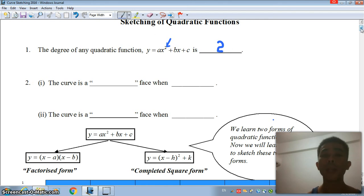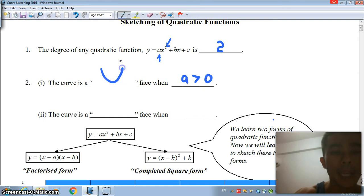Alright, where do we look at? We will always take a look at the coefficient of the square term. So, in this case, if the coefficient, which is a, is positive, it means that we will have a smiley face, otherwise known as a u-shape.